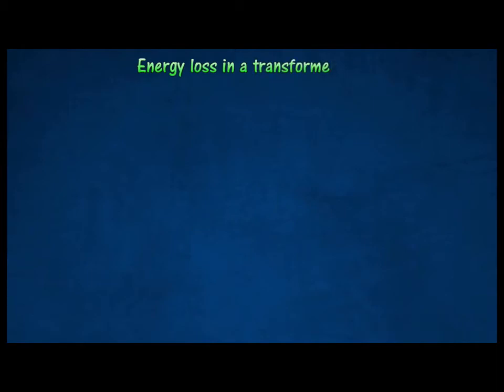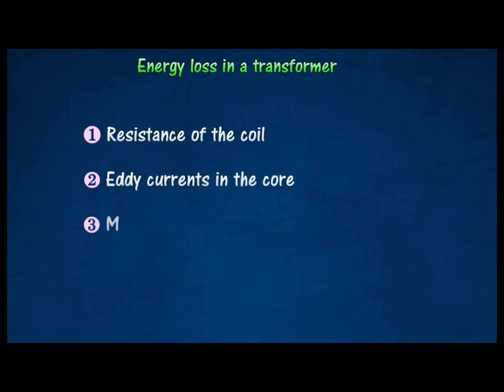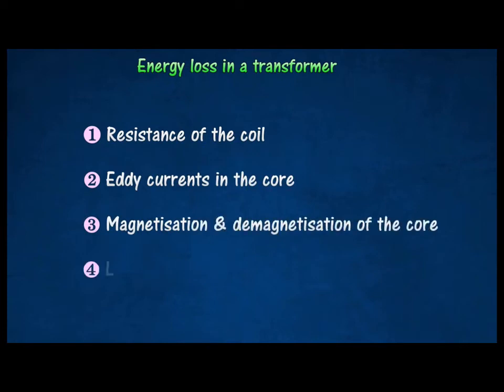In reality, the assumption that transformers are 100% efficient is not a valid one. Some energy will be lost to the surroundings. In practice, energy is lost from a transformer in the following ways: resistance of the coil, eddy currents in the core, magnetization and demagnetization of the core, and leakage of field lines.